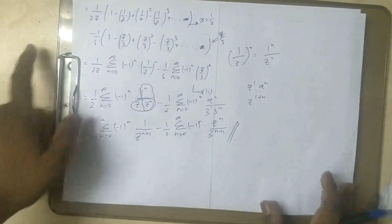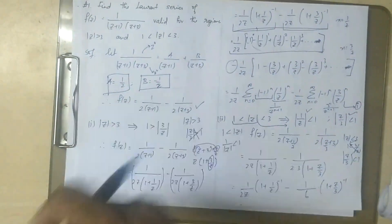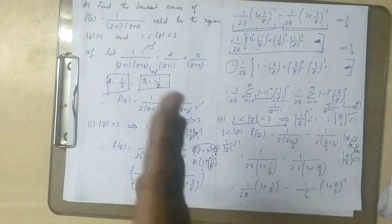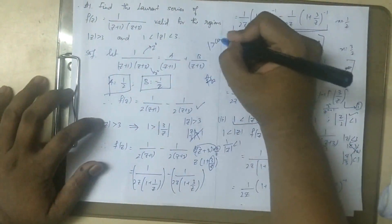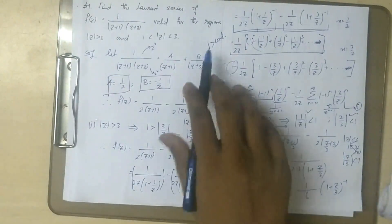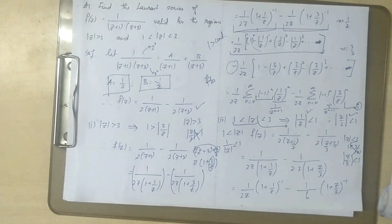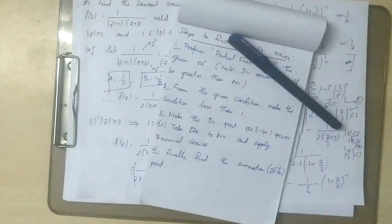So to summarize: first, perform the partial fraction to get A and B. Then apply the condition — mod z greater than 3 is the first region, and 1 less than mod z less than 3 is the second region. The condition should be less than 1 so that the geometric series applies. That's it for now — if you have doubts, please comment. Please like the video. Thanks for watching. Bye.